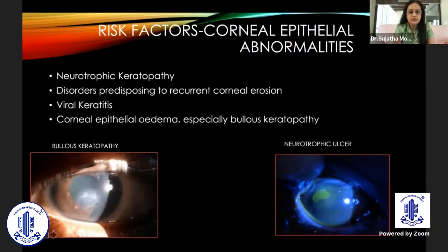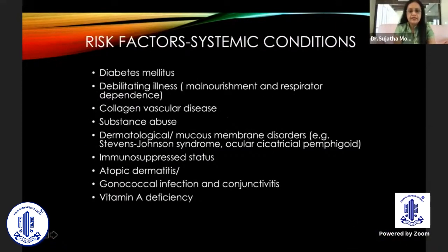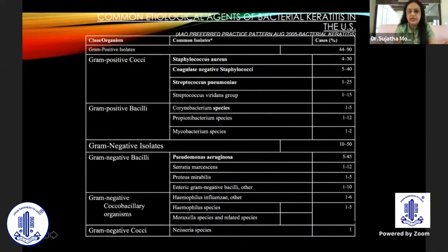Corneal epithelial abnormalities such as neurotrophic keratopathy, recurrent viral keratitis, recurrent corneal erosions, and corneal epithelial edema such as bullous keratopathy could be predisposing causes. Systemic conditions include diabetes mellitus, patients in ICU, collagen vascular disorders, substance abuse, dermatological conditions, Stevens-Johnson syndrome, OCP, immunosuppressive status, and vitamin A deficiency.